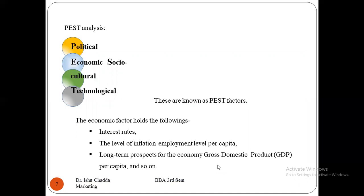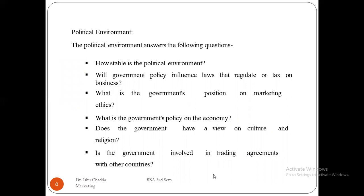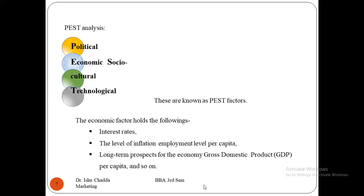PEST analysis consists of Political, Economic, Social/Cultural, and Technological factors. The first factor is the political environment. The political environment considers: how stable is the political environment, will government policy influence laws that regulate or tax the business, what is the government's position on marketing ethics, what is the government's policy on the economy, does the government have a view on culture and religion, and is the country involved in trading agreements with other countries? All these are external environment factors that a company must monitor and respond to.